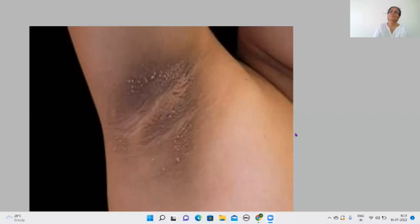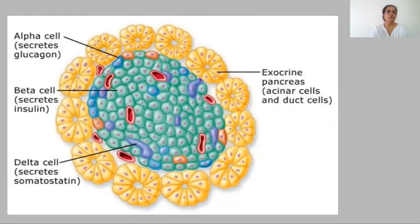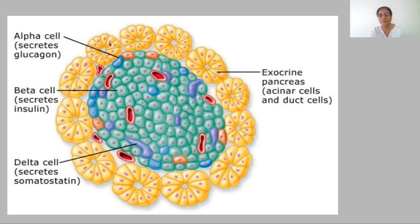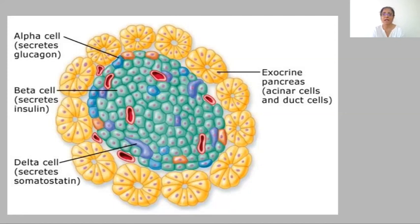Yesterday we spoke about pre-diabetes and insulin resistance. Today we will be understanding the structure of a basic pancreatic cell. First, do not have the impression that pancreas means only insulin — the pancreas also secretes a lot of digestive enzymes and juices. That's why the pancreas is placed very closely to the ending part of the stomach and the beginning part of the small intestine, where digestion and absorption occur.